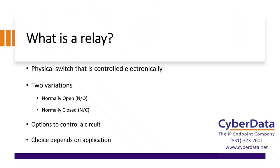There are two different variations you can run into when dealing with relays: normally open, commonly referred to as NO, or normally closed, NC. These are basically two different styles of a circuit where some devices need to be consistently energized with a normally closed circuit and then you de-energize the system for it to take an action. Or the inverse, where the circuit is normally not completed — the circuit is open — and you toggle the relay to temporarily close the circuit so that electricity can flow. You need to know the style of circuit you're working with — normally open or normally closed — to pick the right unit.